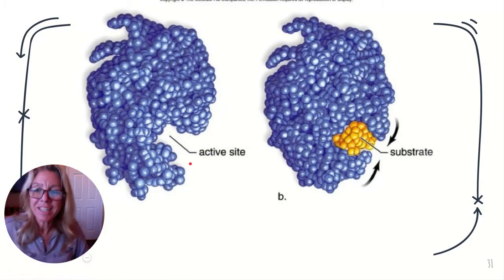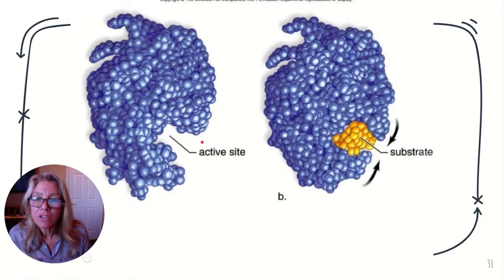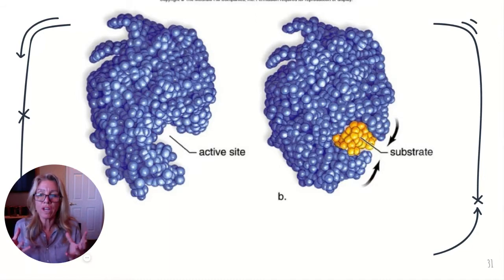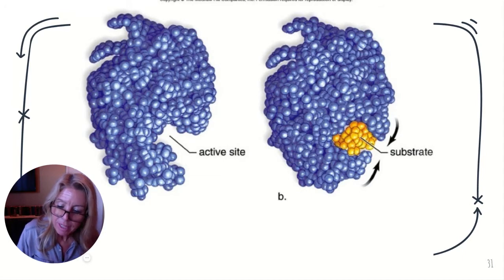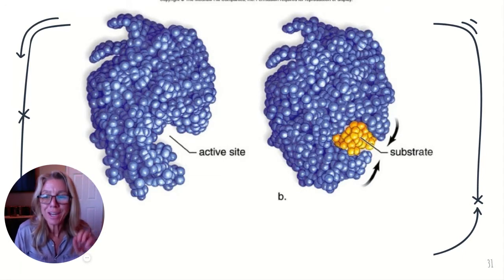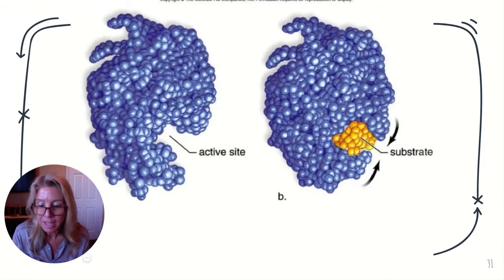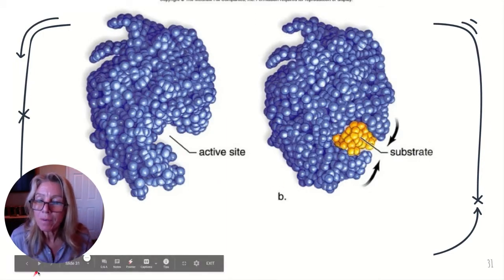When the substrate binds in, the enzyme temporarily changes its shape — this is called the induced fit hypothesis — getting into the shape conducive to making that reaction go forward. Any factor that alters the active site, like temperature, pH, or an inhibitor, can change the shape of the enzyme and its functionality because the enzymes can become denatured.